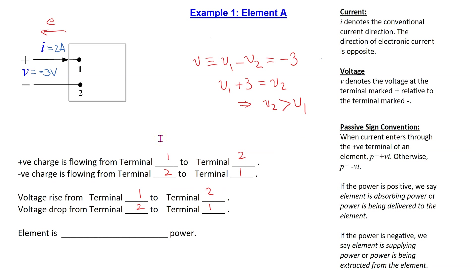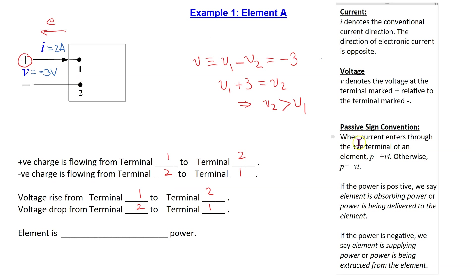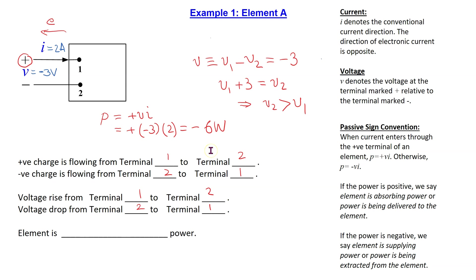Finally, we can apply the passive sign convention to this ideal basic circuit element A. We can see that the conventional current is entering the terminal marked plus. Hence, following passive sign convention, we write the power formula with a plus sign: plus VI, and then we just substitute the values. So, this gives minus 3 times 2, which is minus 6 watts. We can see that the final answer is a negative number, and following the passive sign convention, this means that element A is supplying 6 watts of power.